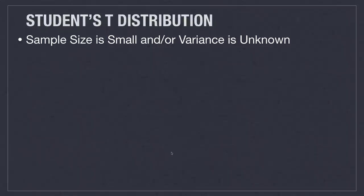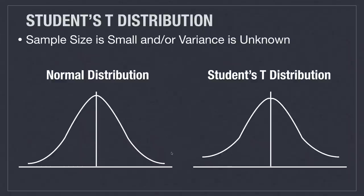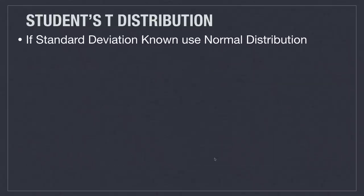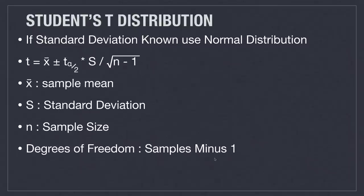Student's T distributions are used whenever your sample sizes are either small or the population variance is unknown. A T distribution looks like a normal distribution, except it has fatter tails, meaning there is wider dispersion between the variables. When we know the standard deviation, we can compute using z-scores and z-tables with a normal distribution. However, we are not always provided with that information. The formula is our sample mean plus the T-table value multiplied by the standard deviation divided by the square root of the number of samples minus one. The number of samples minus one is very often also referred to as the degrees of freedom.